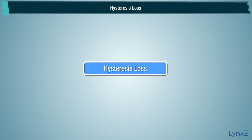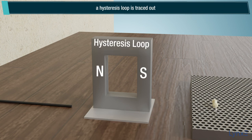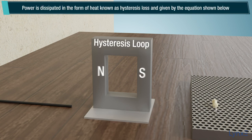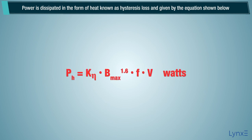Hysteresis loss. The core of the transformer is subjected to an alternating magnetizing force, and for each cycle of EMF, a hysteresis loop is traced out. Power is dissipated in the form of heat known as hysteresis loss and given by the equation shown below.